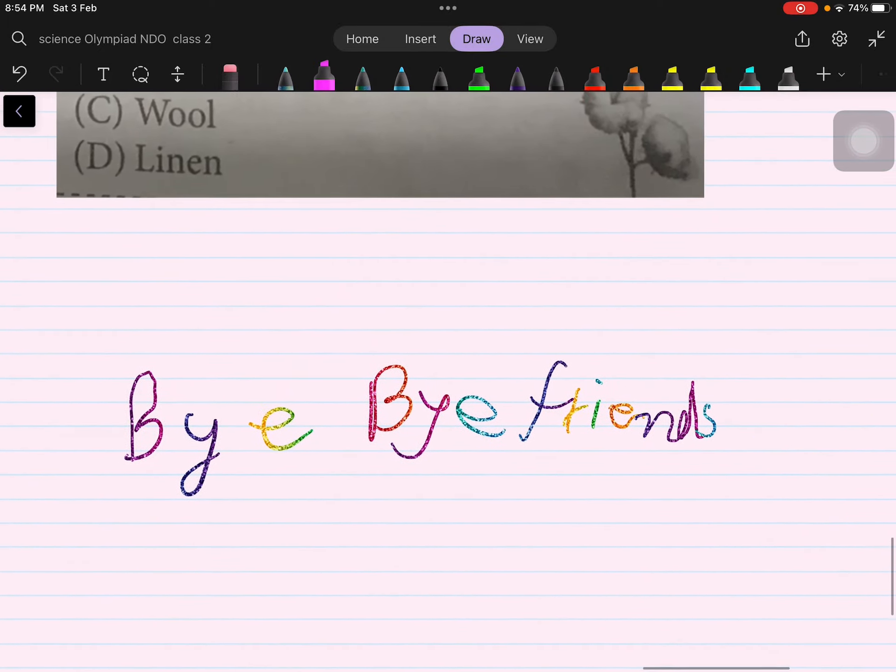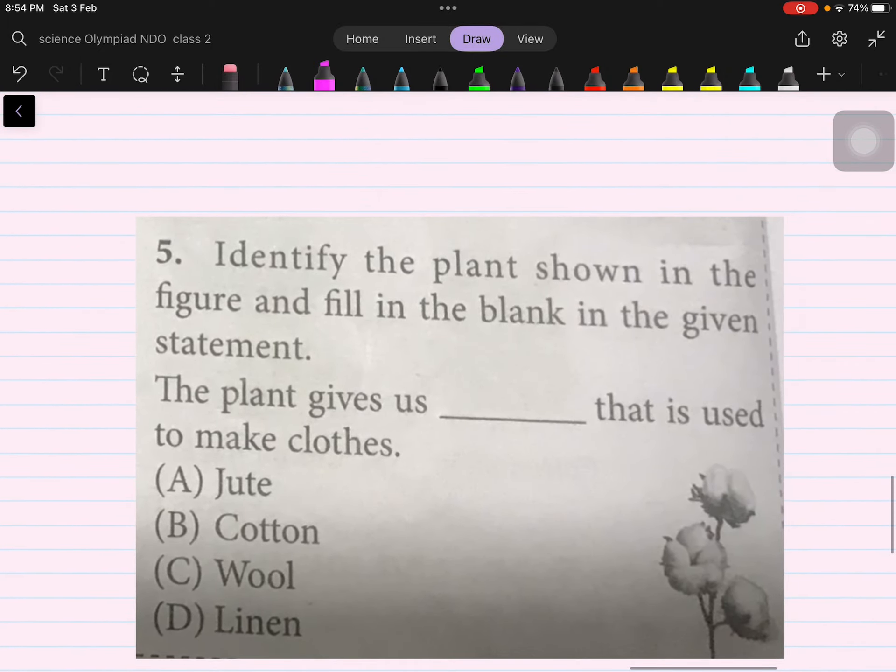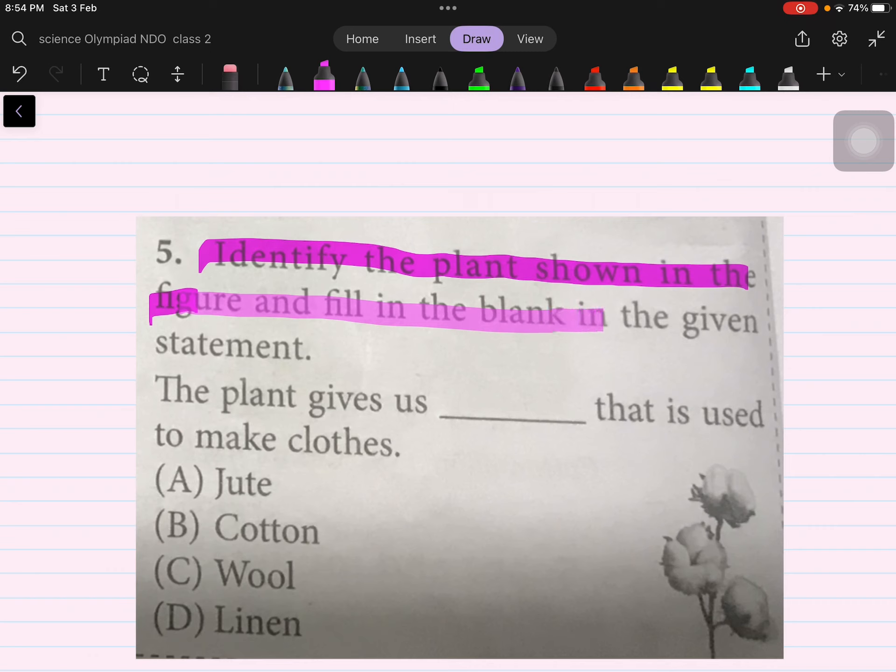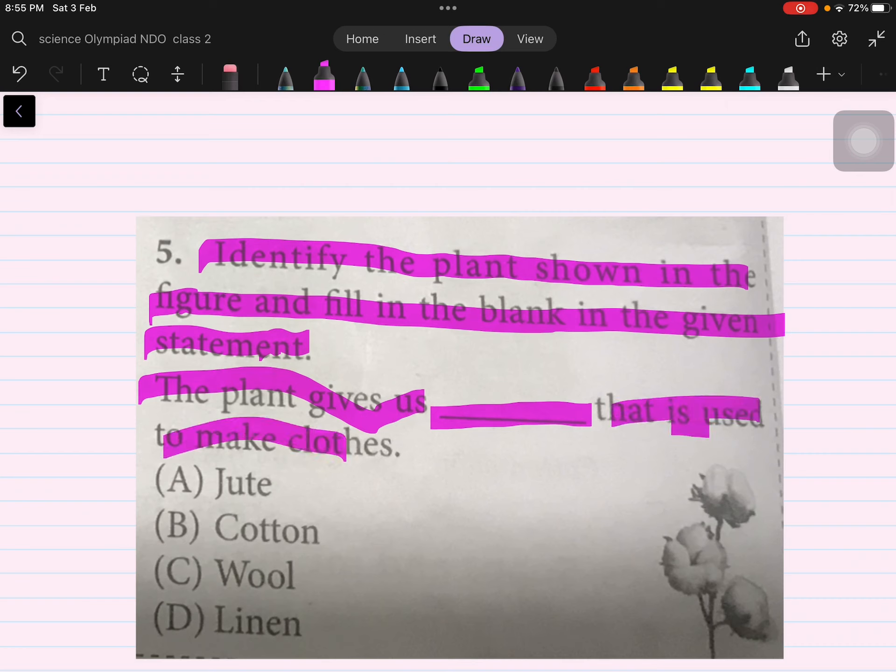Identify the plant shown in the figure and fill in the blank. The plant gives us blank that is used to make clothes. Cotton. This is cotton, right? We will bubble B.